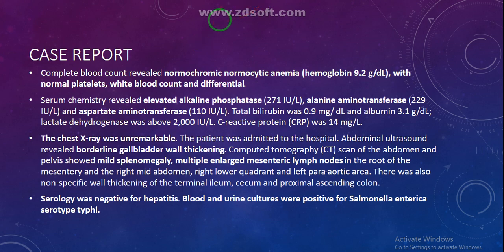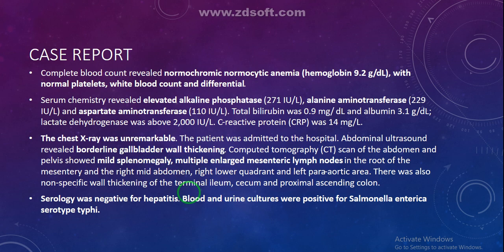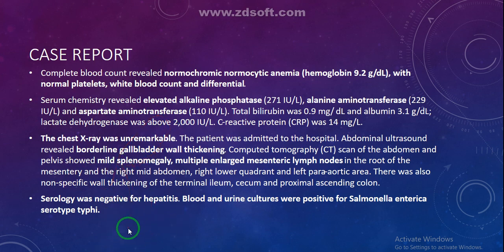Abdominal ultrasound revealed borderline gallbladder wall thickening. CT scan of the abdomen and pelvis showed mild splenomegaly, multiple enlarged mesenteric lymph nodes in the root of the mesentery and the right mid-abdomen, with no specific wall thickening of the terminal ileum, cecum, or proximal ascending colon. Serology was negative for hepatitis, while blood and urine cultures were positive for Salmonella enterica serotype typhi.